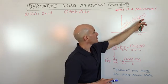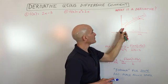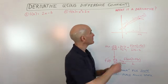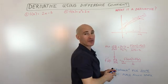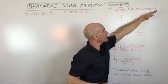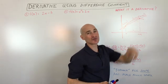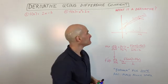Let's start off by looking at this graph right here. See this curve? What we're going to do is we're going to pick two points along the curve and we're going to draw a secant — that's this line right here that cuts through the curve at two points.